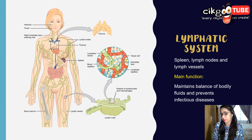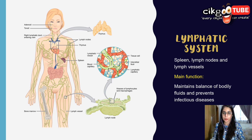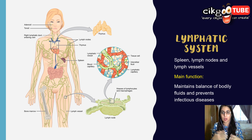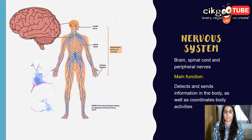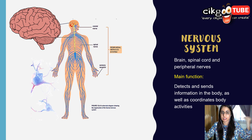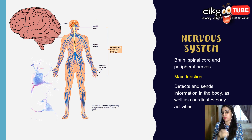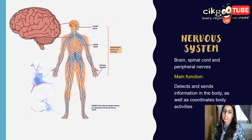The lymphatic system consists of the spleen, lymph nodes, and lymph vessels. Its main function is to maintain the balance of bodily fluids and prevent infectious diseases — which we will learn about in Chapter 12. The nervous system involves the brain, spinal cord, and peripheral nerves, and functions to detect and send information in the body as well as coordinate body activities.